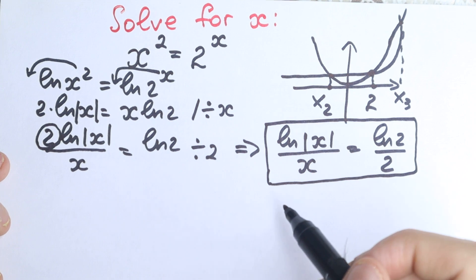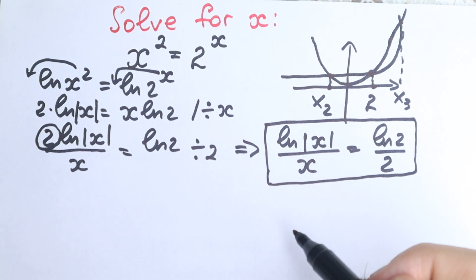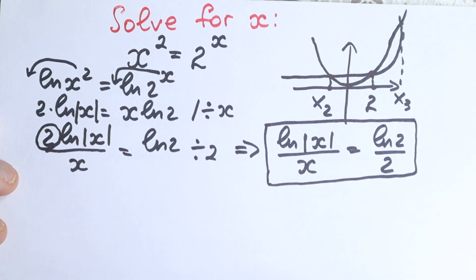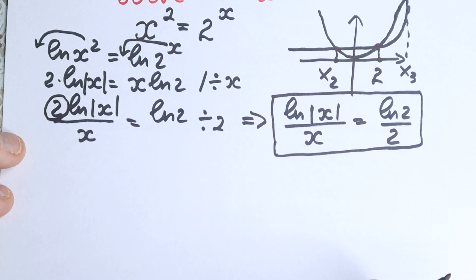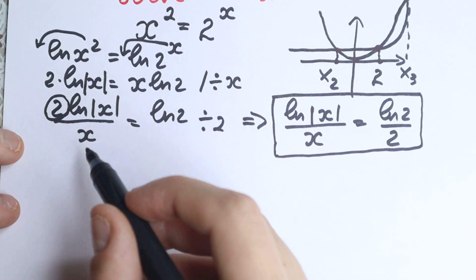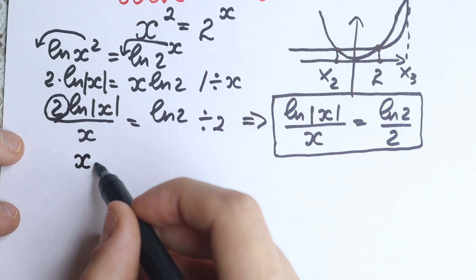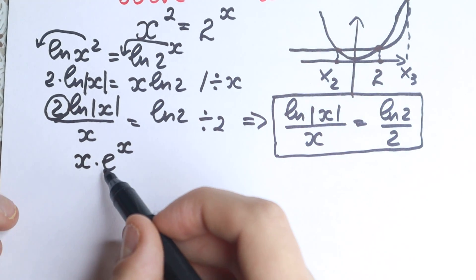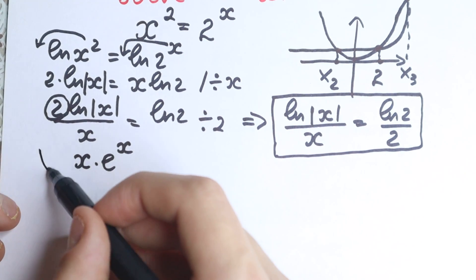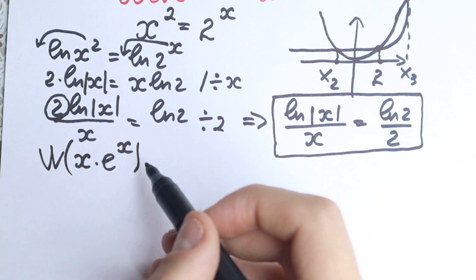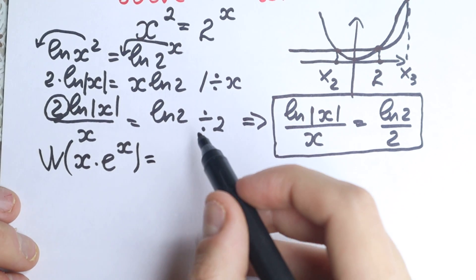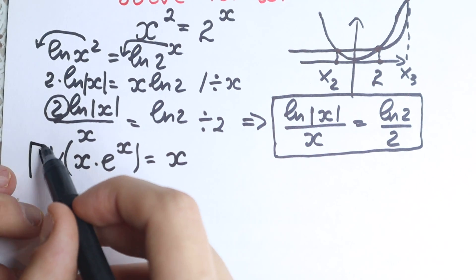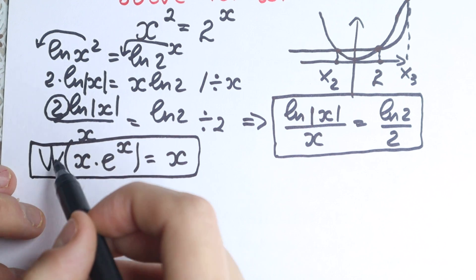Right now let's learn about the Lambert W function, because we need it here. In simple terms: imagine you have an expression like x times e to the power x. If we apply the Lambert W function to that expression, we get equal to only our x — which is really important, because we can easily simplify a lot with the Lambert W function.